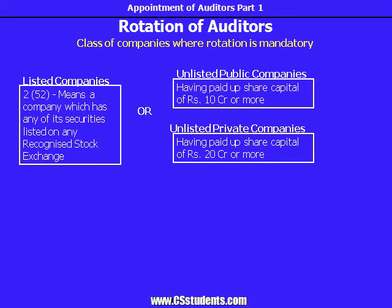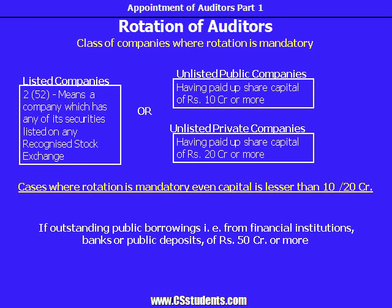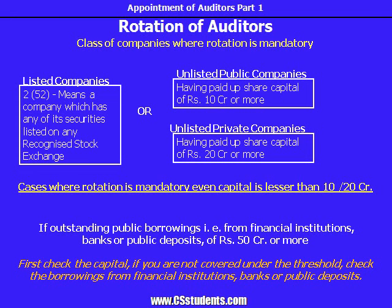So check the share capital of your company to find out if rotation is mandatory. If your company's capital is lesser than the stipulated threshold, there is no need to rotate the auditor. However, there are additional criteria wherein, although your company's capital is lesser than 10 crore or 20 crore, you will have to mandatorily rotate the auditors — that is, if the concerned company has outstanding public borrowings from financial institutions, banks or public deposits, of rupees 50 crore or more. So first check the capital; if you are not covered under the threshold, please also check the borrowings from financial institutions, banks or public deposits.